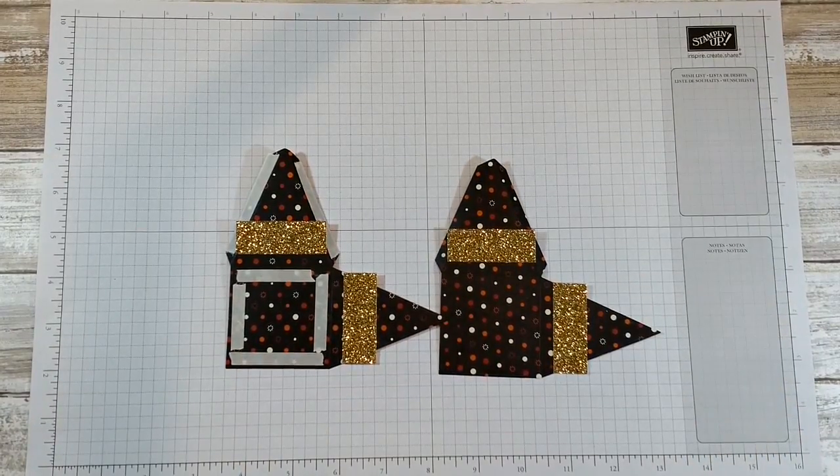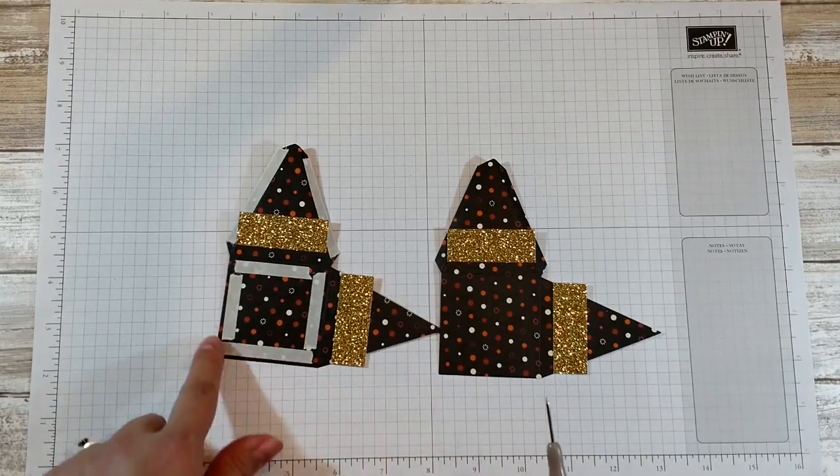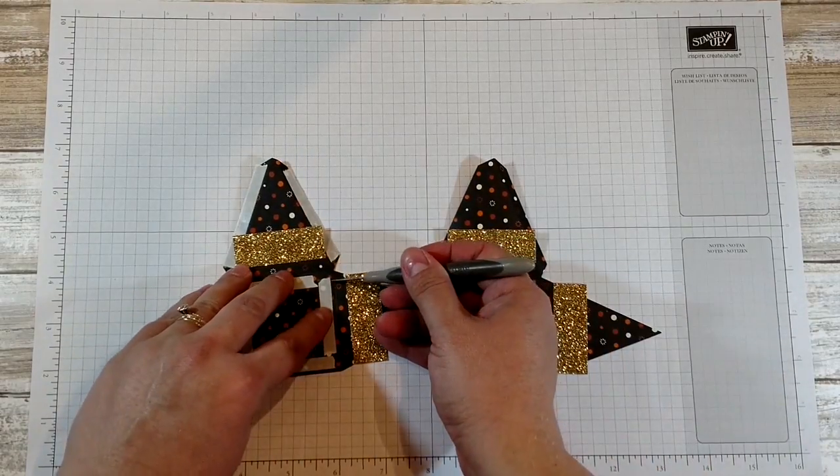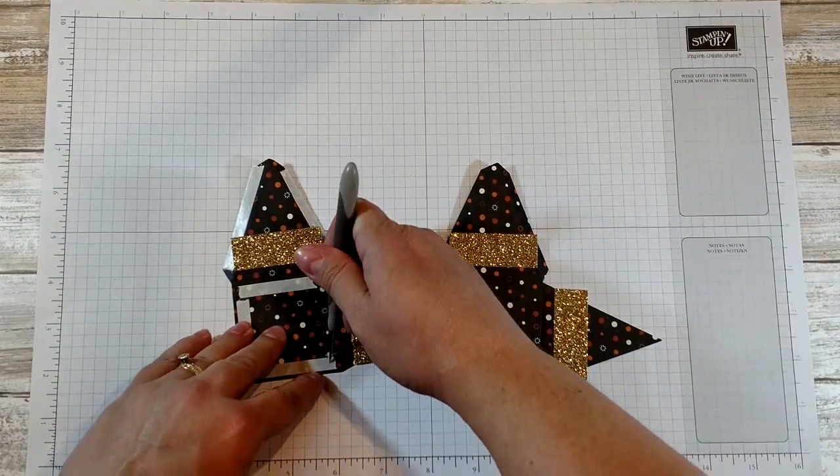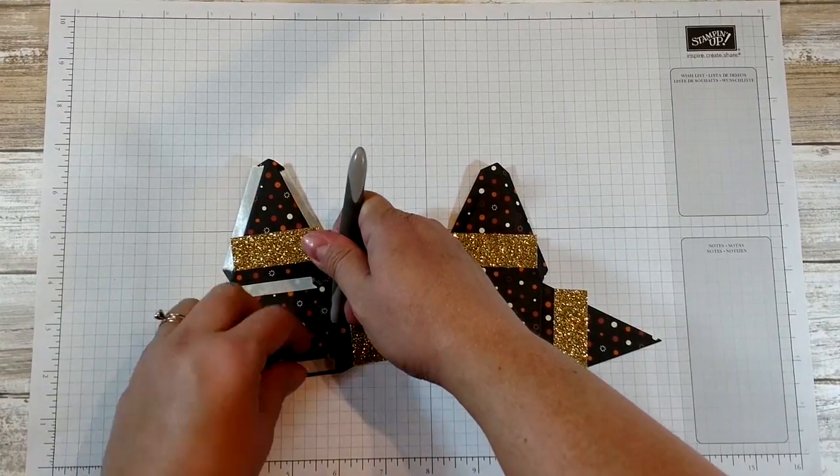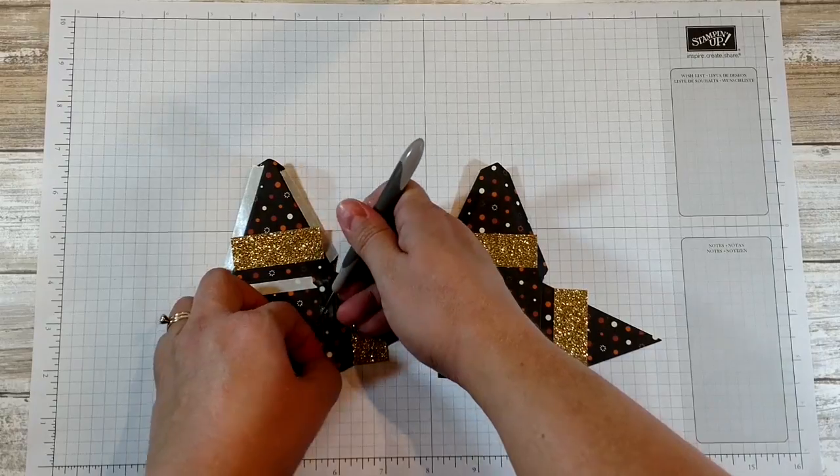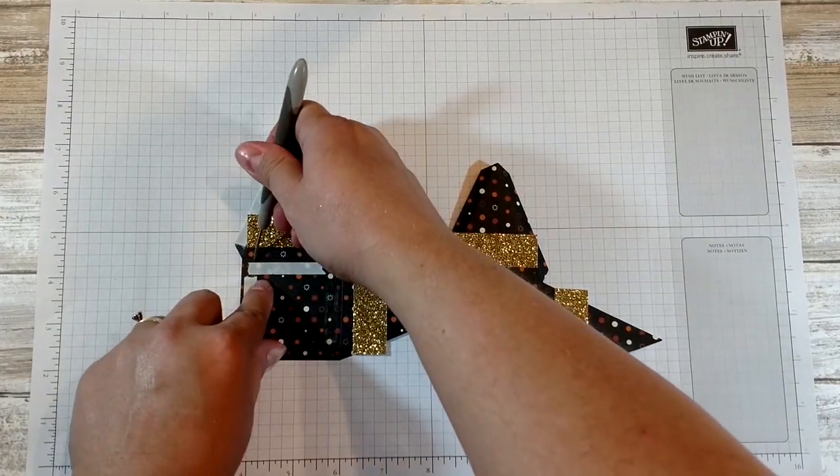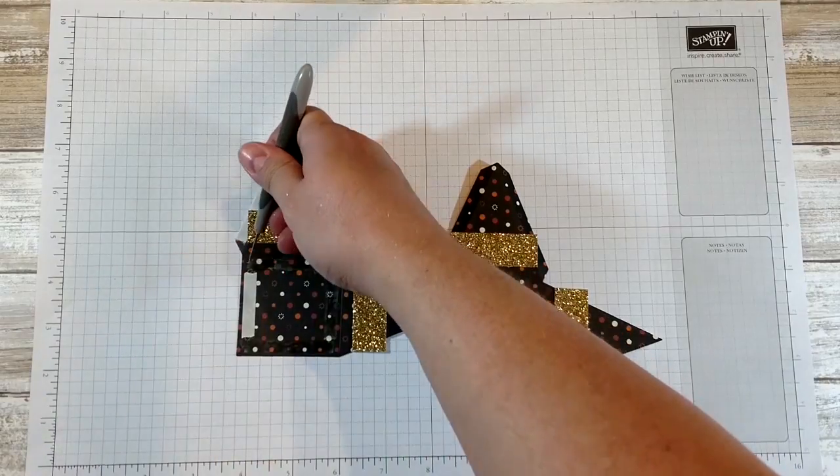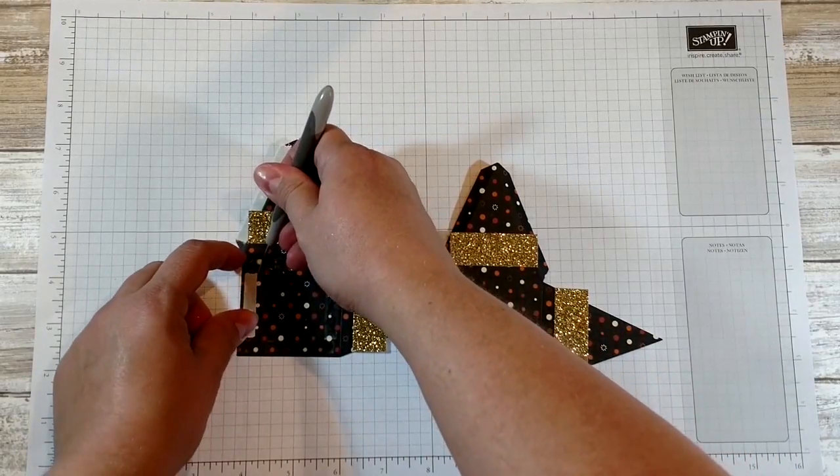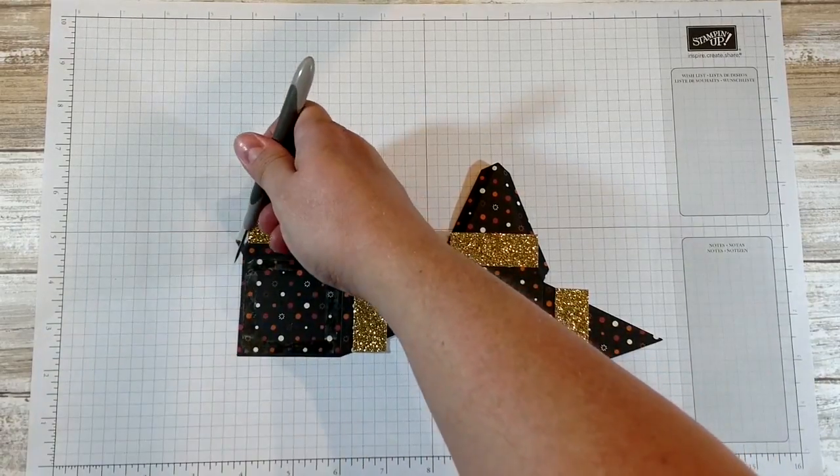Now I'm going to remove the paper backing off of this square piece here. And I find sometimes it's easier to lift it off with a paper piercer. Sometimes it works fine with my fingers, sometimes it doesn't. It seems to work a little better with the paper piercer.